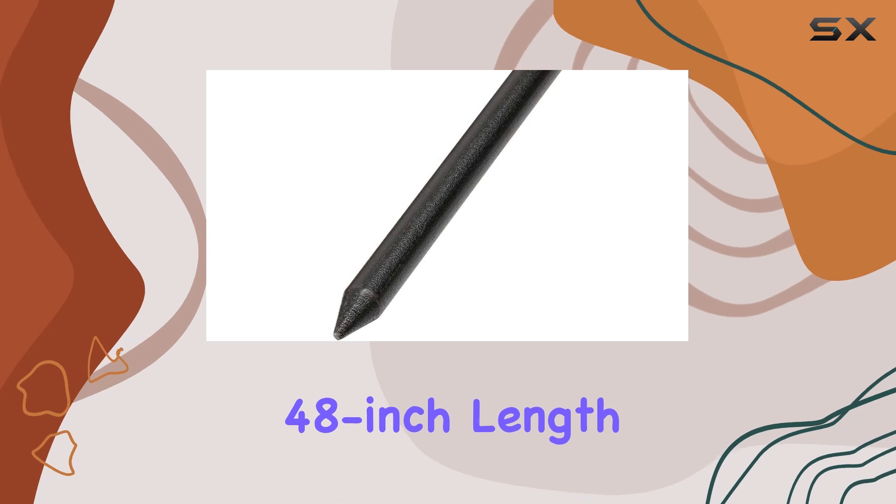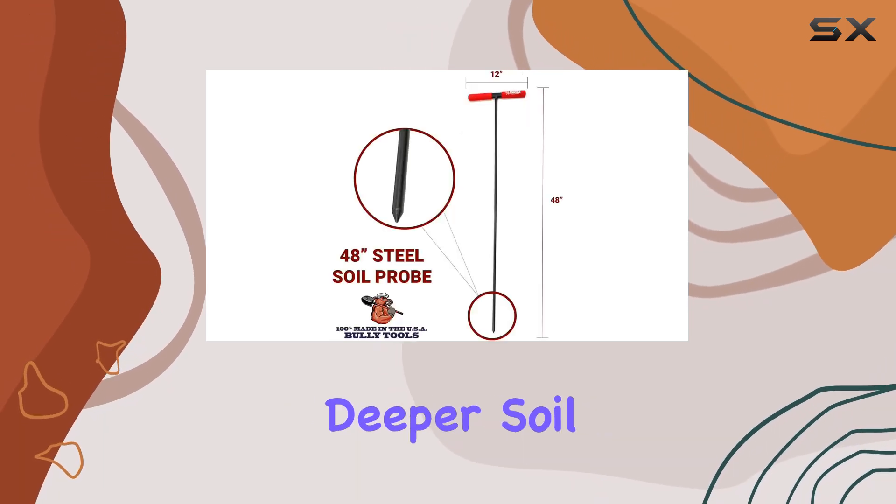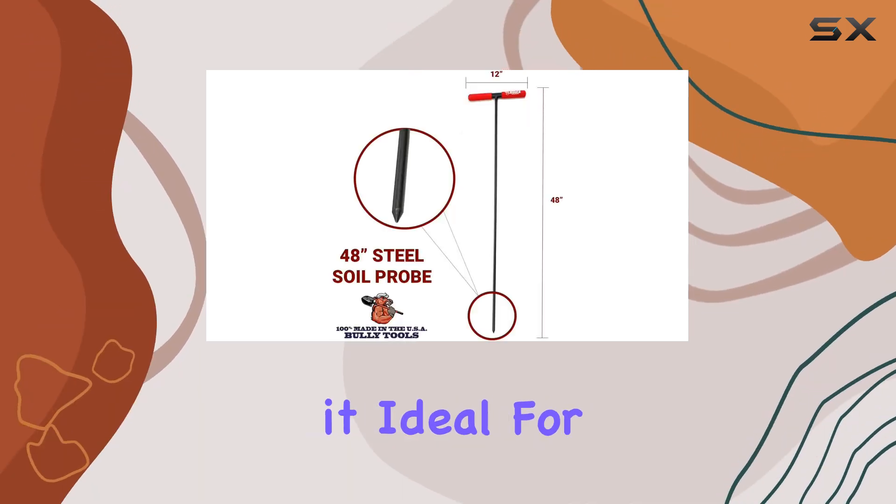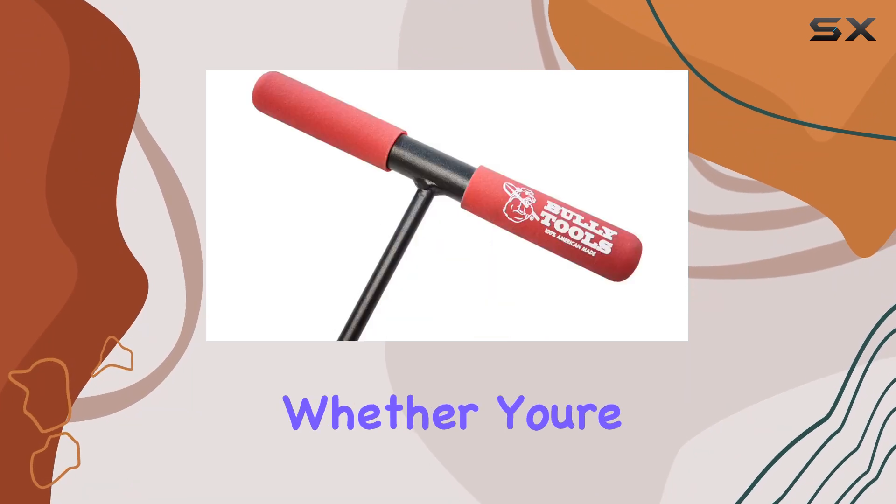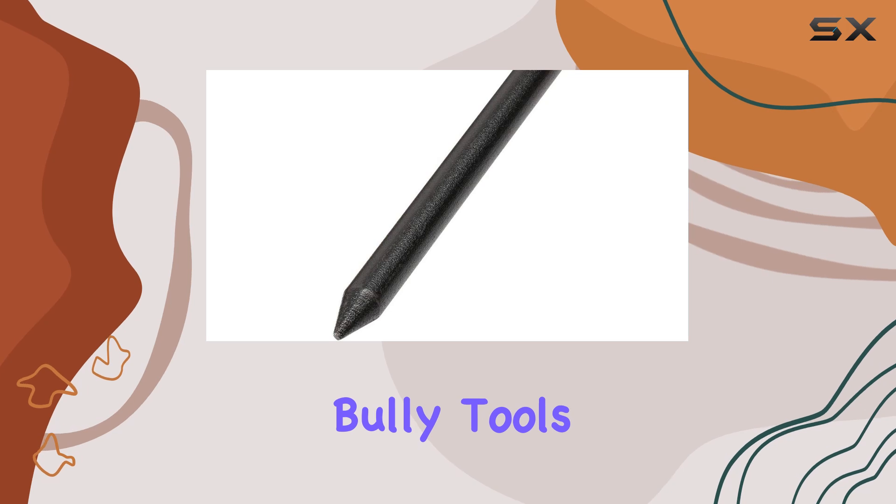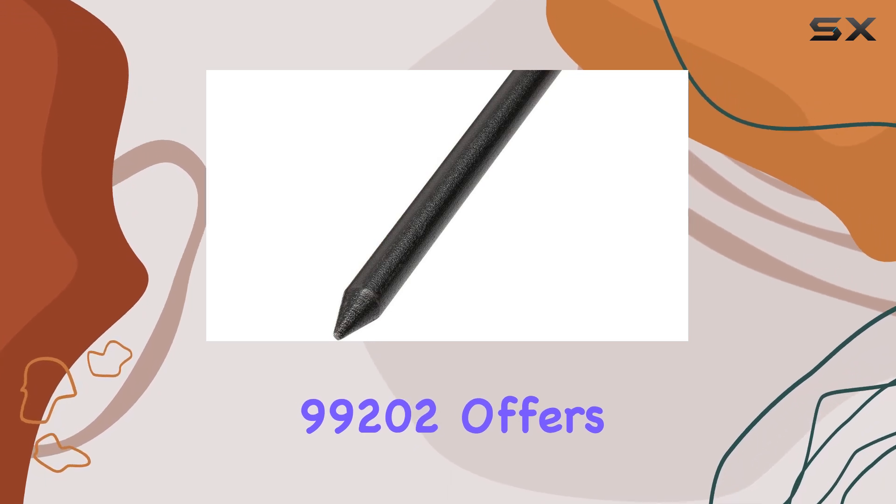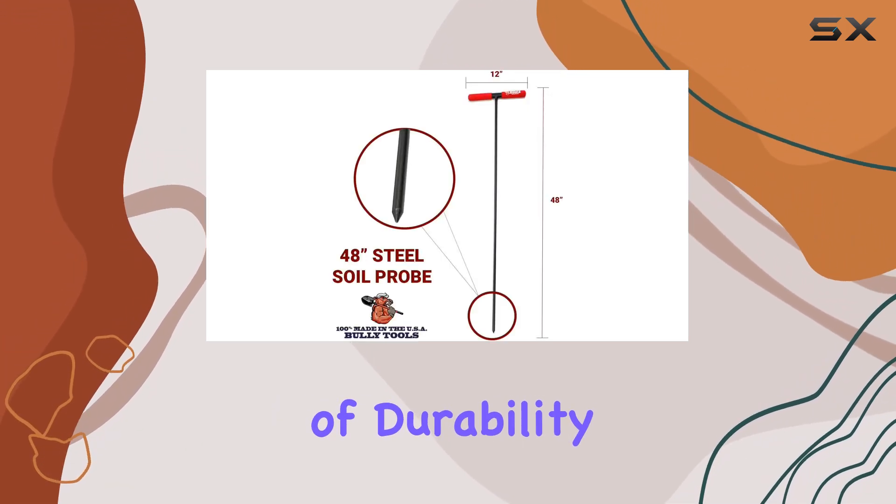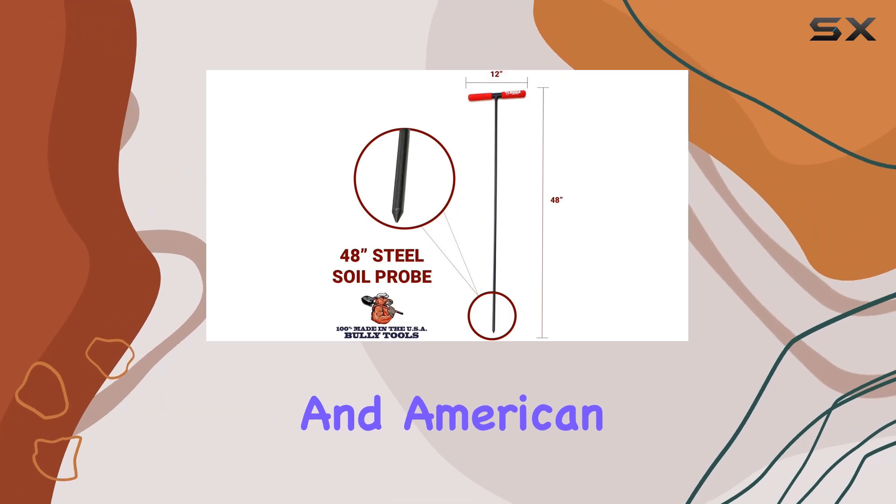The probe's 48-inch length ensures that you can reach deeper soil layers, making it ideal for comprehensive soil sampling. Whether you're a professional in agriculture or a dedicated gardener, the Bully Tools 99202 offers a perfect blend of durability, functionality, and American craftsmanship.